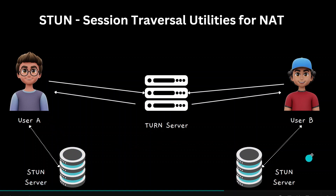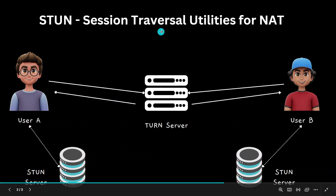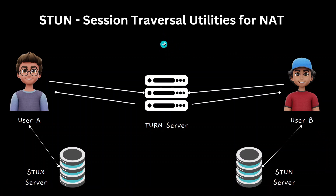After SDP information is received and exchanged through the signaling server, we expect a direct peer-to-peer communication — but that is not always the case. In some scenarios, direct peer-to-peer communication is simply not possible, due to reasons like users being behind a firewall or having asymmetric NATs. However, we can still connect — audio and video calls are still possible — and that is made possible with the help of a TURN server.